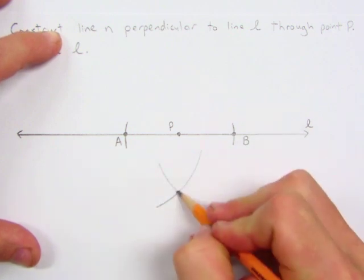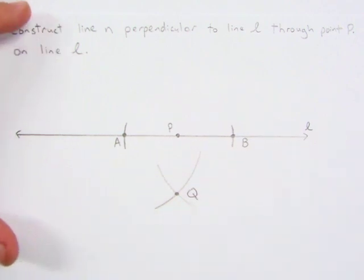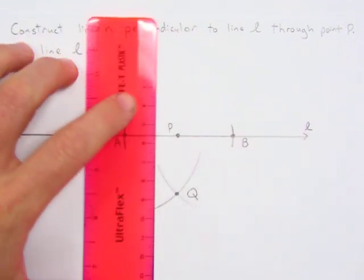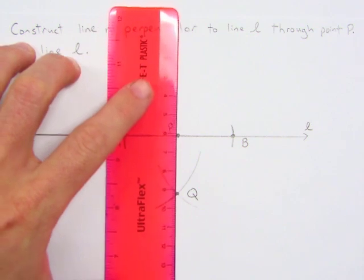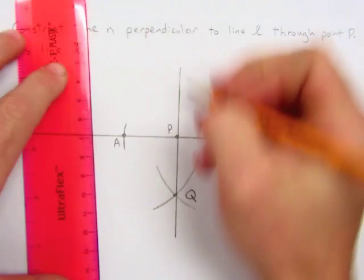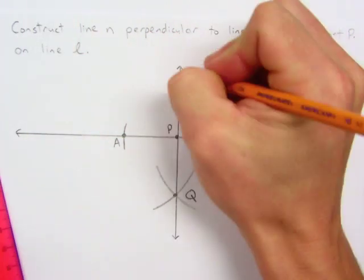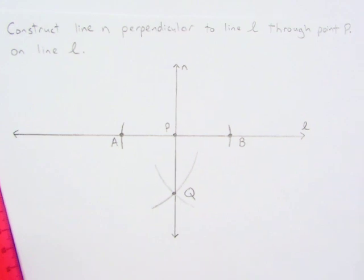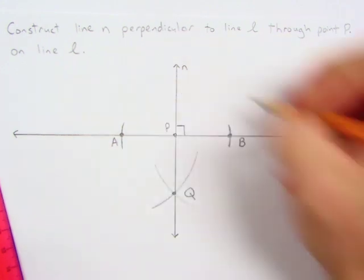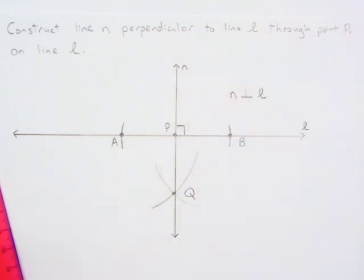Label that intersection as point Q. And now we just draw a line through points P and Q. We'll call it line N. And so now we know that N is perpendicular to L.